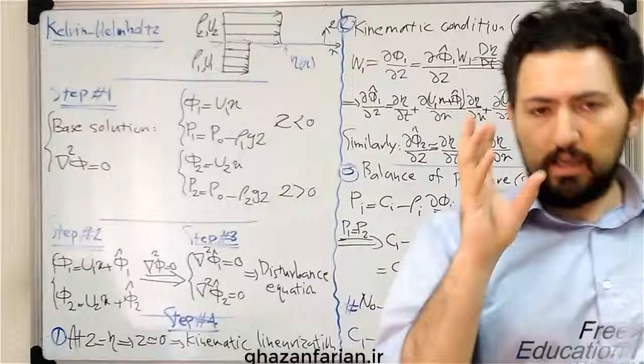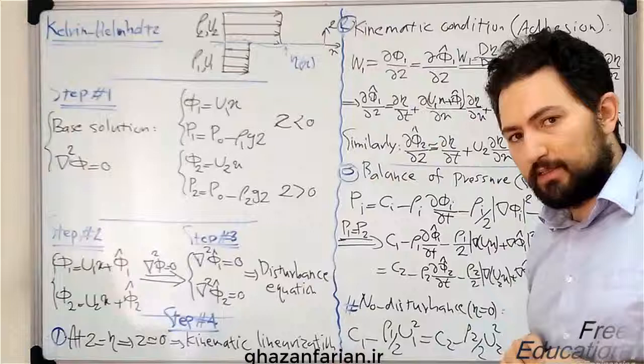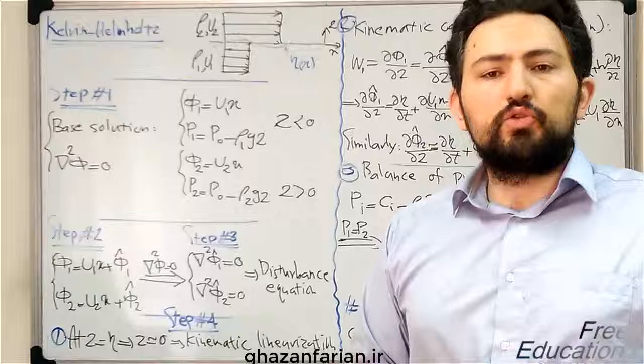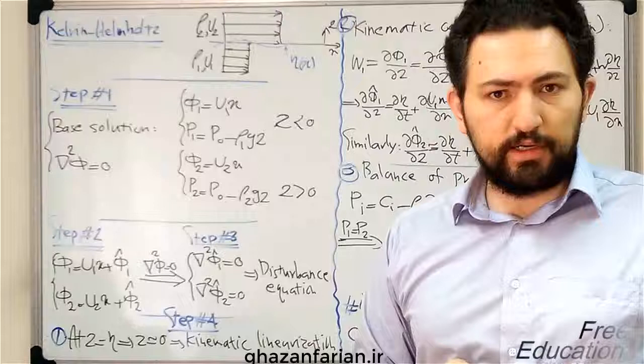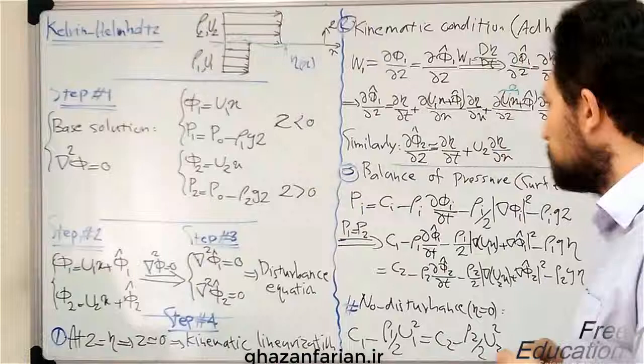The vortex sheet is the main element in the panel method, which is a very well-known concept in potential flow theory. The other name for this interface is the slip line. A slip line appears in compressible flows — for example, when investigating the interaction of two oblique shock waves, a slip line may appear. A slip line is a line along which the tangential velocity has a discontinuity.